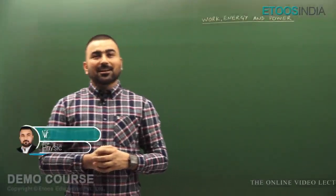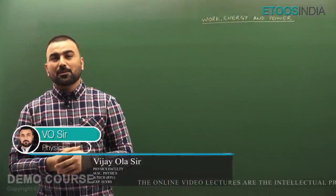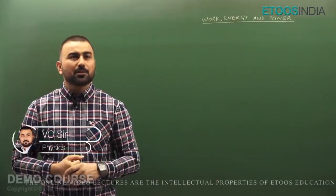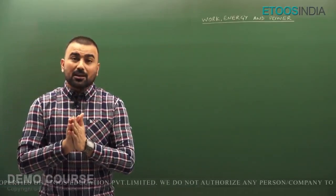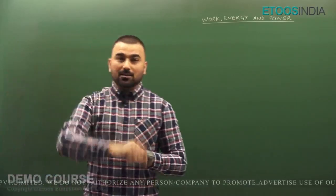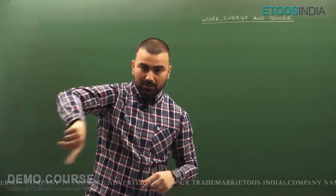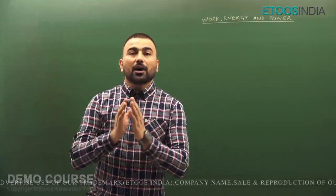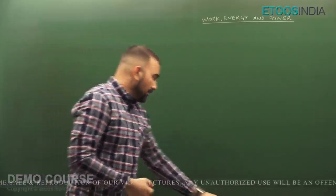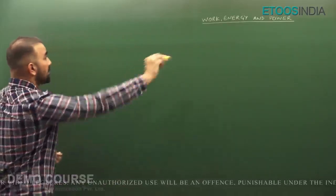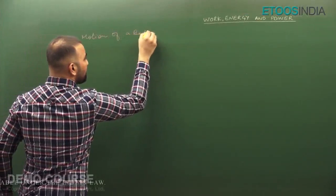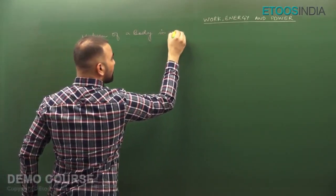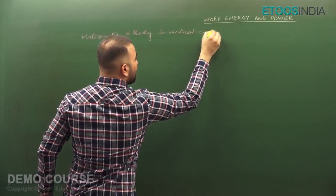Good morning. We are studying conservation of momentum and the next topic we are going to study is a very important example: the motion of a body in a vertical circle. This is a horizontal circle and this is a vertical circle. This is an NCERT question, so without wasting time, let's study the motion of a body in a vertical circle.